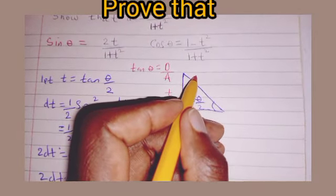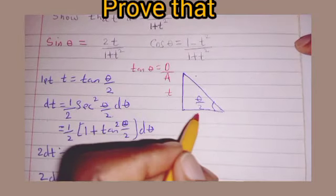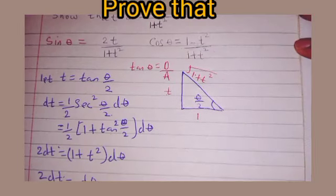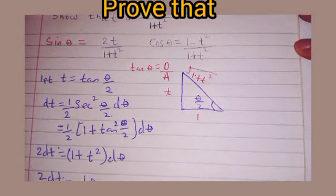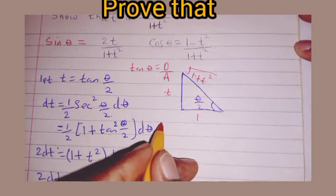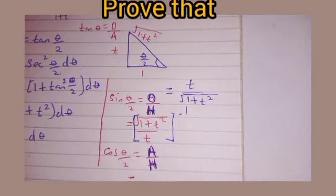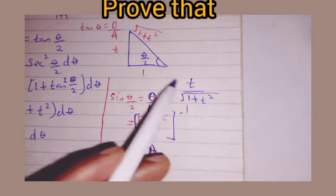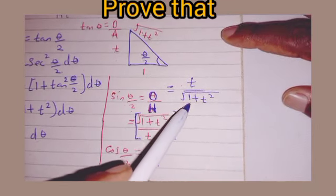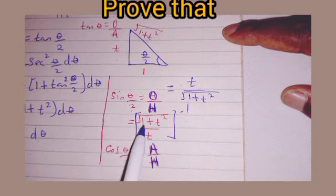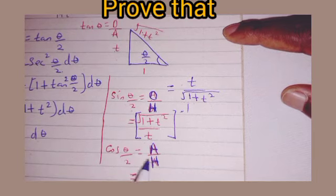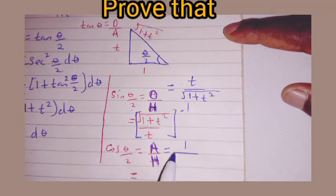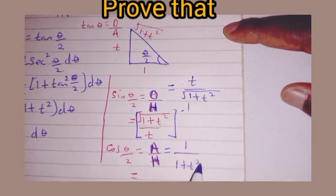Using Pythagoras' theorem, we obtain the hypotenuse as √(t² + 1) = √(1+t²). From the triangle, sin(θ/2) = t/√(1+t²) and cos(θ/2) = 1/√(1+t²).